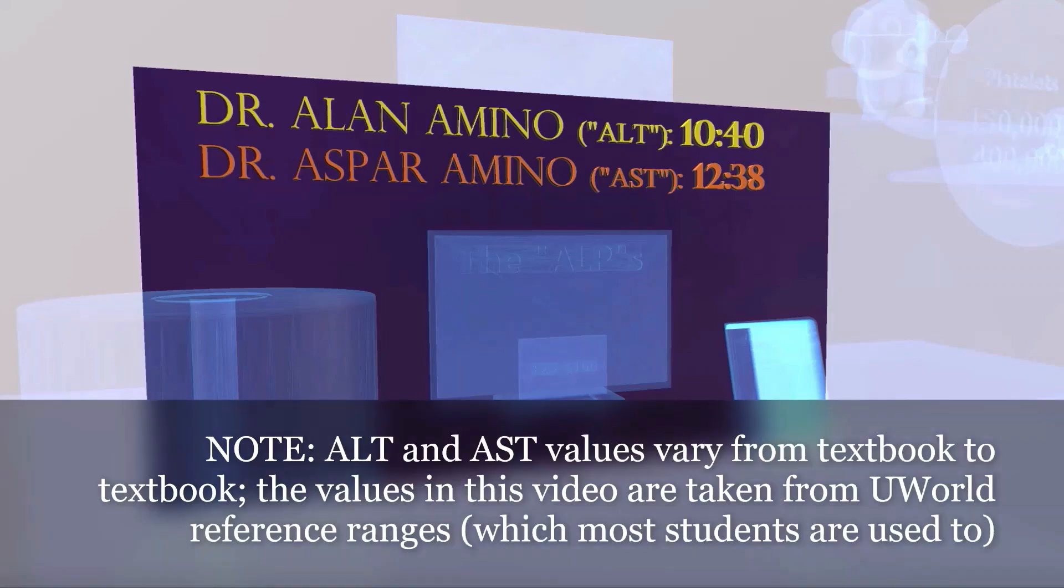Dr. Aspar Amino reminds us of aspartate aminotransferase AST. He shows up at 12:38, about two hours later. The reference range for aspartate aminotransferase AST is from 12 to 38 units per liter. I know this is not the most fantastic mnemonic, but it at least sets the stage for the rest of our scene.